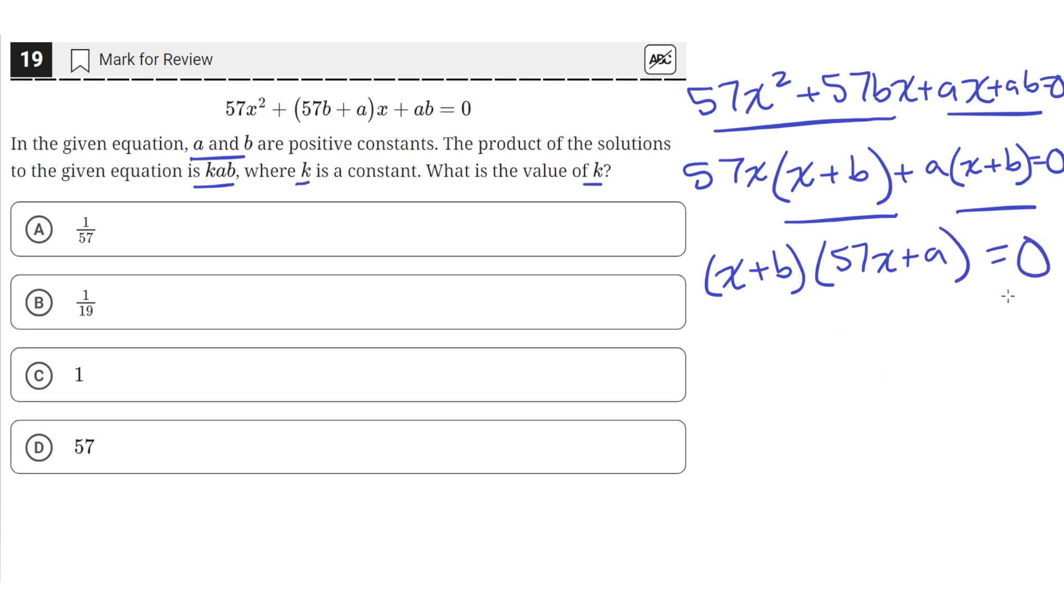So now we have this fully factored quadratic. This means the solutions are x = -b and x = -a/57. These are the two solutions from the two parentheses here.